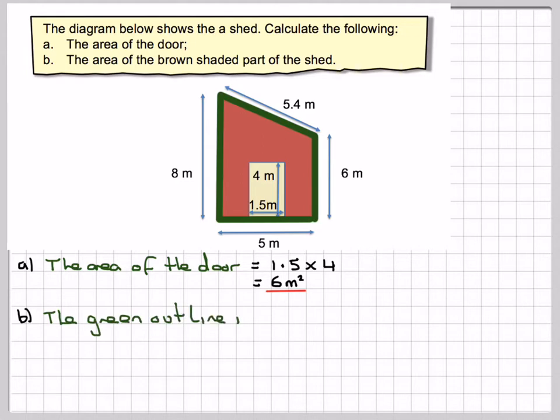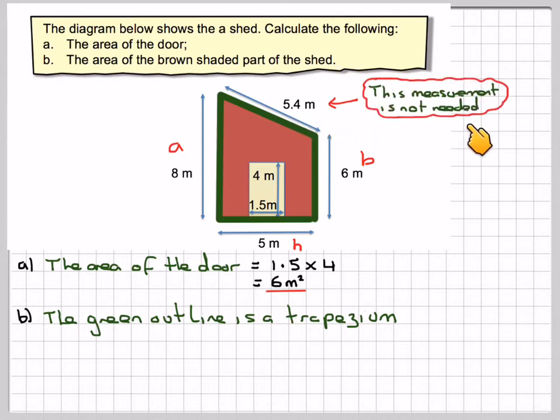The green outline is a trapezium. To find the area of a trapezium, if we call this side A, this side B, these are the two parallel sides, and this is the perpendicular height between them. This other measurement here, which is 5.4, is not actually needed.